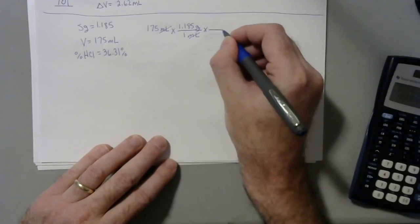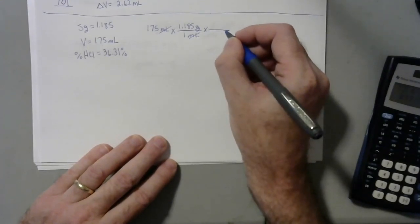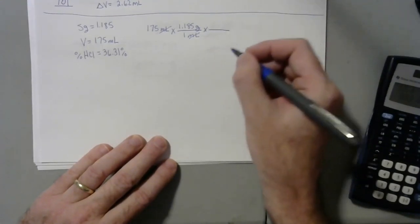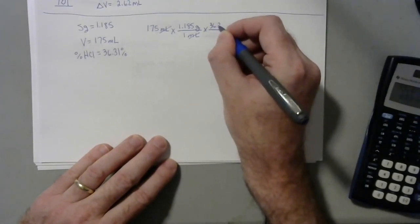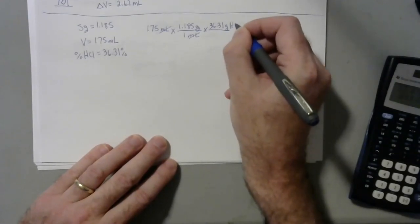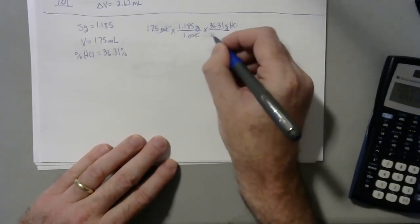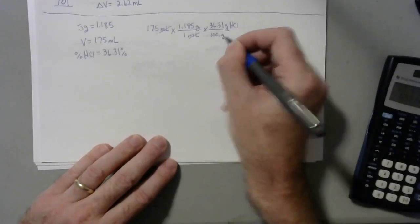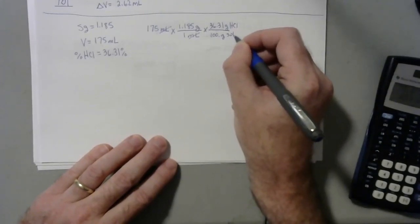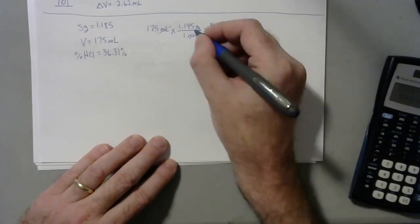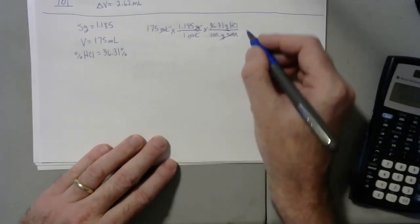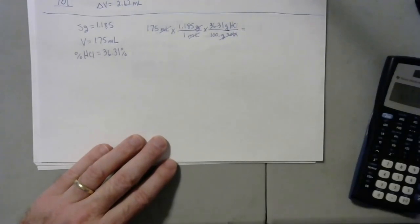And then there's a trick, you can use the percentage as a factor as well. So if we say there's 36.31 grams of the HCl per 100 grams of solution using SOLN as an abbreviation. So then my grams are going to cancel, leaving me with grams of HCl, which is what the problem asks for.